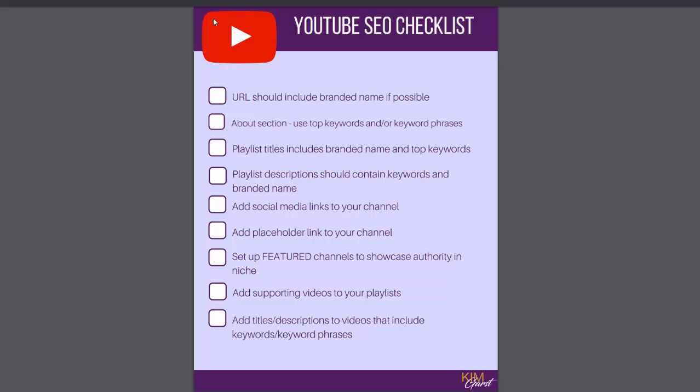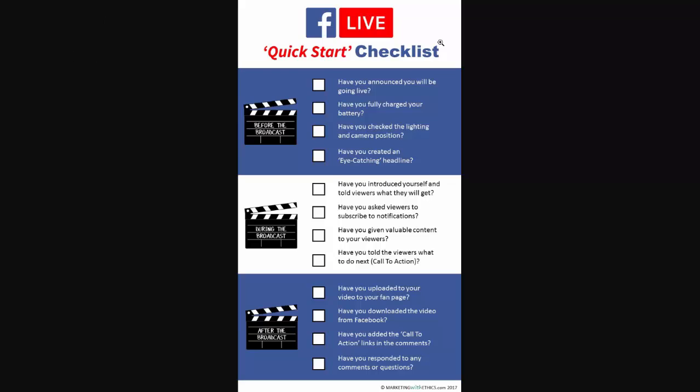A similar one that I've created myself is the Facebook Live checklist. With this it's the four main points to do before, during and after your broadcast, to keep you on track with the activities to make sure you've covered the main points. It's simple, it's one page, there's only one or two lines per action and it makes it very easy for people to follow.